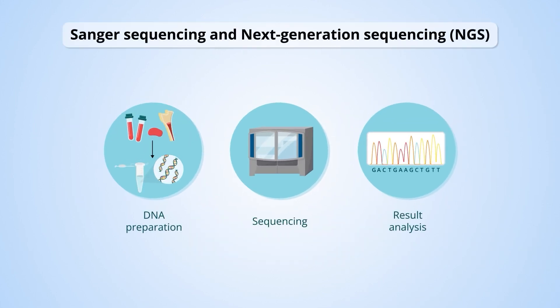Sanger sequencing and next-generation sequencing are types of gene sequencing. Both provide high-resolution sequencing, but NGS offers much higher throughput and the ability to sequence several genes at the same time. Gene sequencing synthesizes copies of the DNA being investigated and monitors the identity of the nucleotides that are added as the new DNA strand extends. The different types of gene sequencing differ in how the added nucleotides are detected.